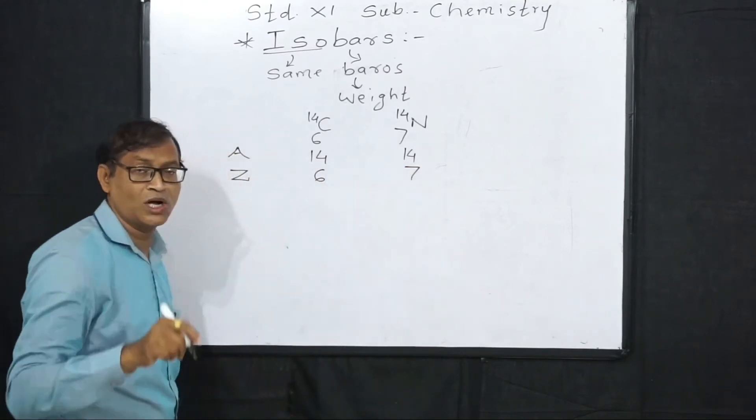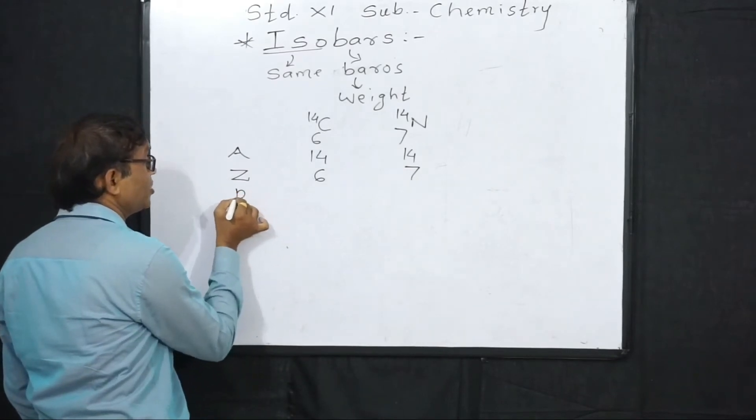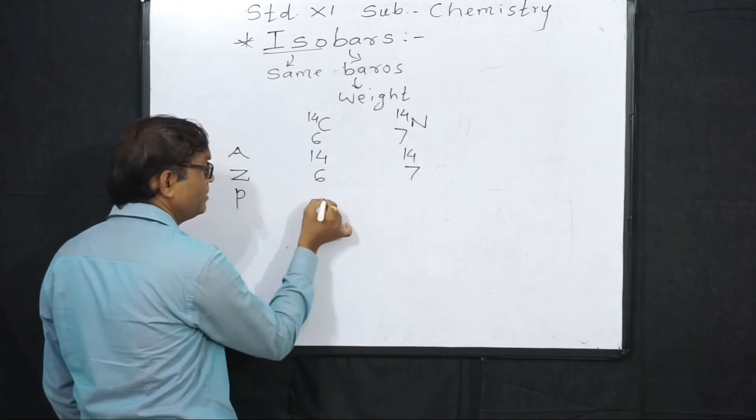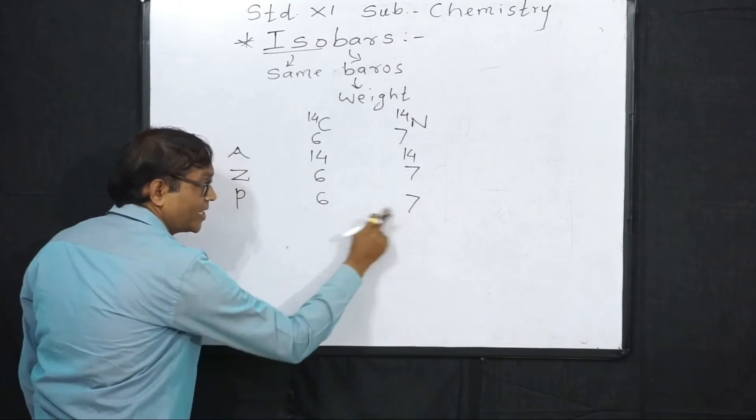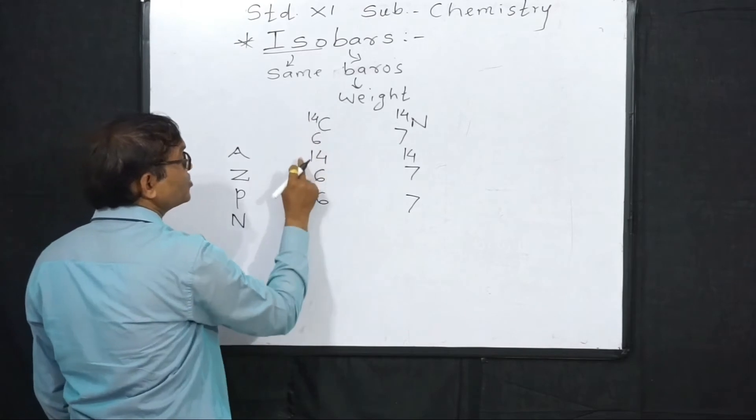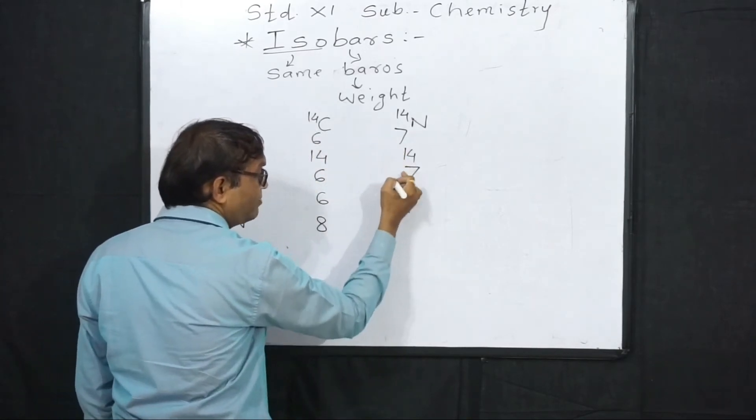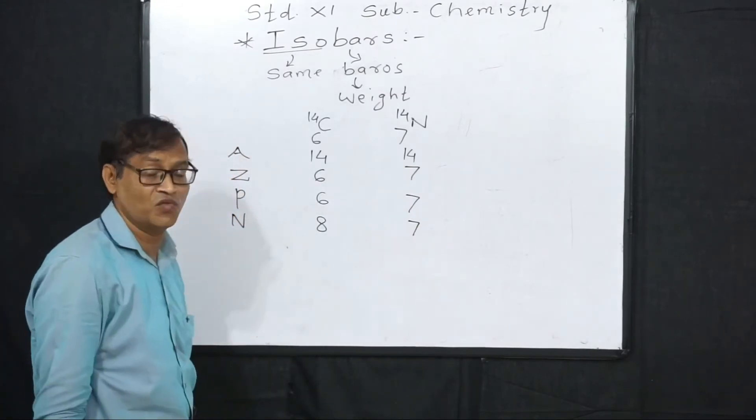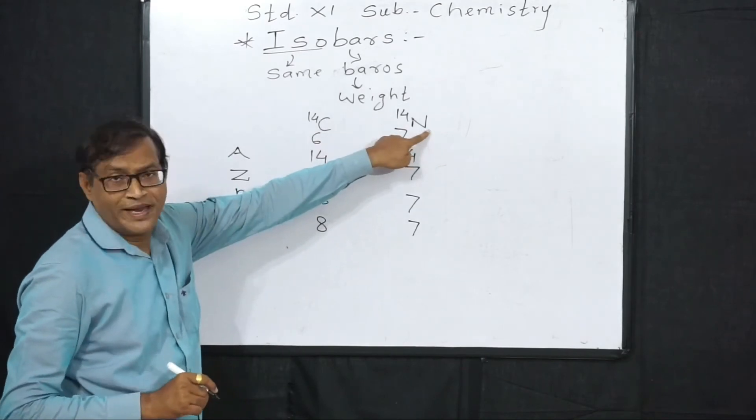The atomic number is different. The number of protons - atomic number here is 6 and here is 7, so protons are 6 and protons are 7, protons are different. The number of neutrons is 14 minus 6 equals 8, and 14 minus 7 equals 7. The number of neutrons is 8 and here is 7, neutrons are different. So in these two atoms we have to see...